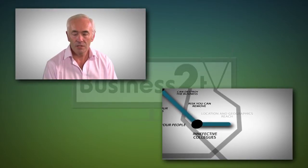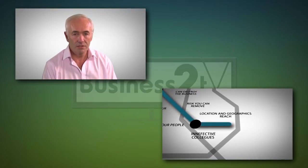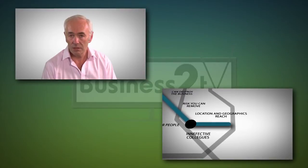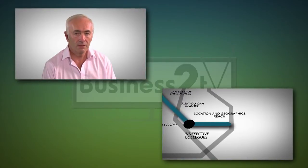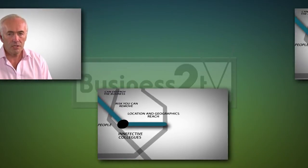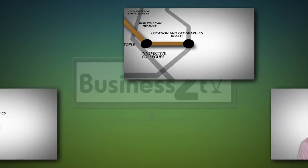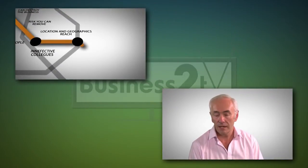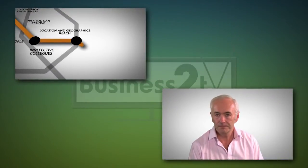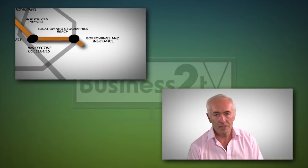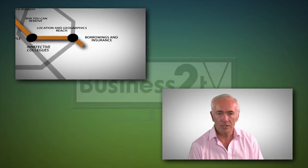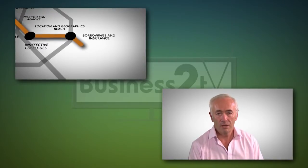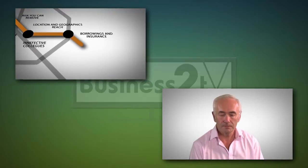Consider next your location and geographic reach for your products — is it adequate going forward? Then look at production or service processes and assess what would happen if these failed in any key area. Now look at borrowings and insurance — a more traditional look at risk — together with measurement systems and reporting.